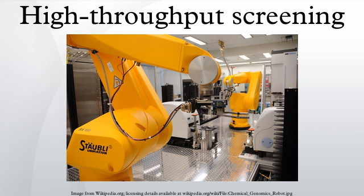Automation systems: Automation is an important element in HTS's usefulness. Typically, an integrated robot system consisting of one or more robots transports assay microplates from station to station for sample and reagent addition, mixing, incubation, and finally readout or detection. An HTS system can usually prepare, incubate, and analyze many plates simultaneously, further speeding the data collection process. HTS robots that can test up to 100,000 compounds per day currently exist. Automatic colony pickers pick thousands of microbial colonies for high-throughput genetic screening. The term UHTS, or ultra-high-throughput screening, refers to screening in excess of 100,000 compounds per day.